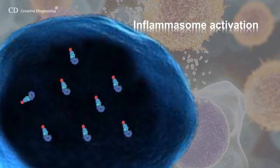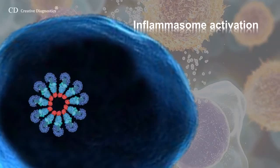Additionally, priming immediately licenses NLRP3 by inducing its deubiquitination. After priming, NLRP3 inflammasome activation requires a second, distinct signal to activate NLRP3 and lead to the formation of the NLRP3 inflammasome complex.